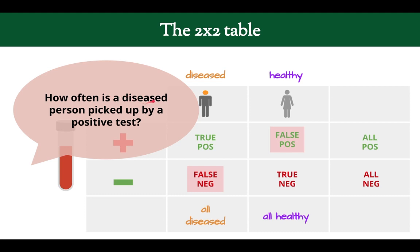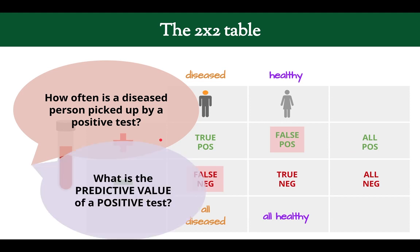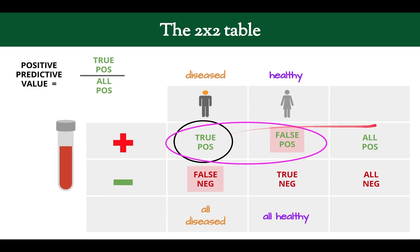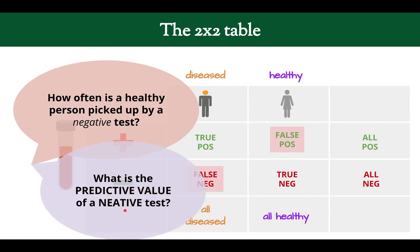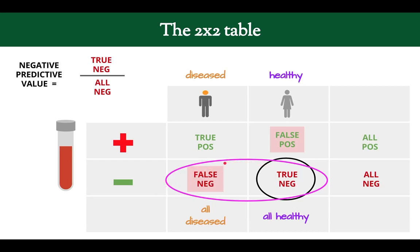We can also look at this differently. How often is a diseased person picked up by a positive test? Of all the positive tests, how often does that patient actually have a disease? That is the positive predictive value — true positives over all positives. Conversely, how often is a healthy person picked up by a negative test? That is the negative predictive value — true negatives over all negatives.